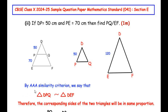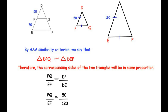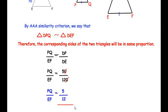By the AAA similarity criterion, triangle DPQ is similar to triangle DEF, so corresponding sides are in the same proportion. Therefore, PQ over EF equals DP over DE. Substituting the values, PQ over EF equals 50 over 120. Cancelling the zeros from numerator and denominator, we get PQ over EF equals 5 over 12.